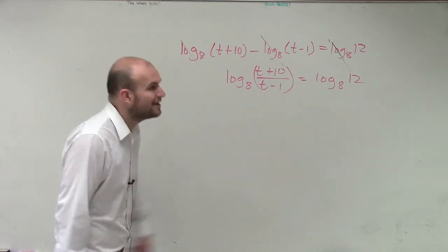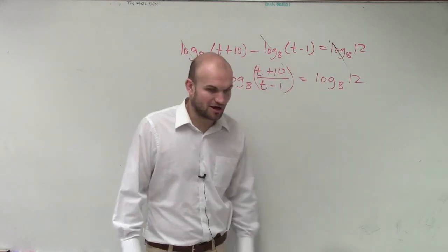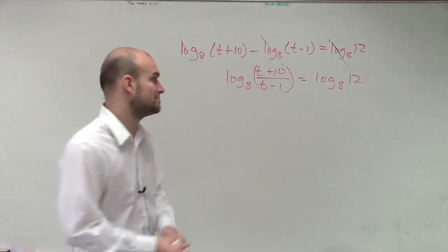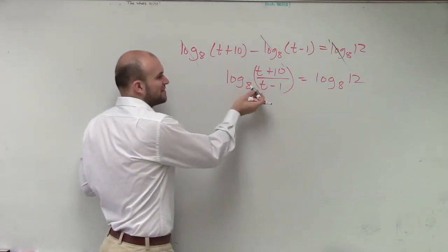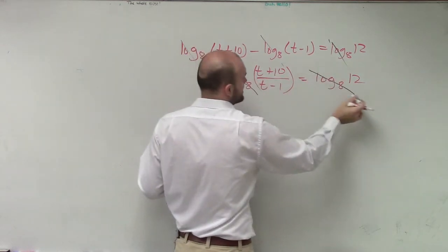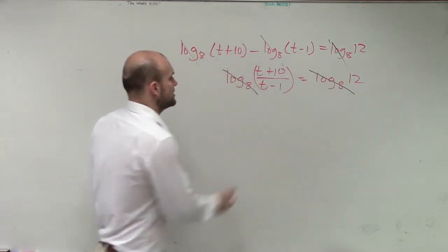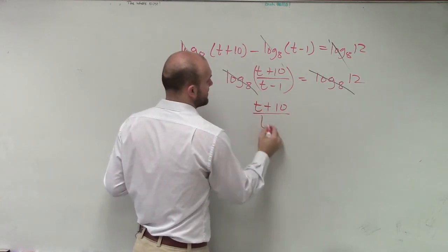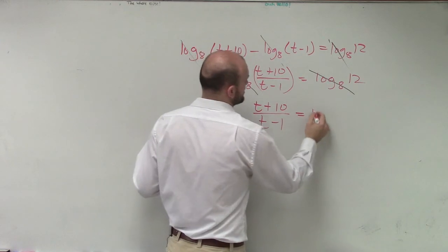Now I have a logarithm equal to another logarithm. Now I can apply the equality property of logarithms. Since I'm taking log base 8 and log base 8, then each of these expressions are equal to each other. So now I have (t plus 10) divided by (t minus 1) equals 12.